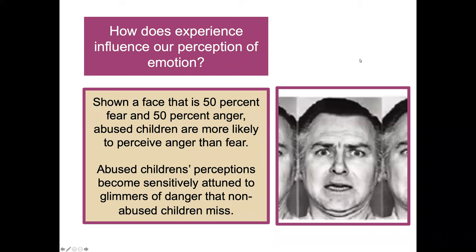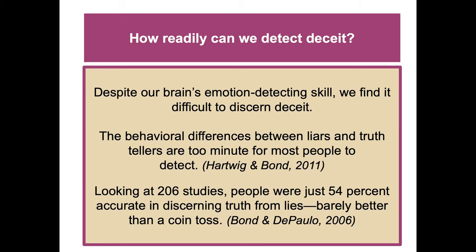How about deceit — how readily can we detect it? Despite our brain's emotion-detecting skill, we often have difficulty discerning deceit. The behavioral differences between liars and truth-tellers are too small for people to detect. Looking at 206 studies, people were just 54% accurate in discerning truth from lies — barely better than a coin toss. So research shows we're not very good at detecting deceit.